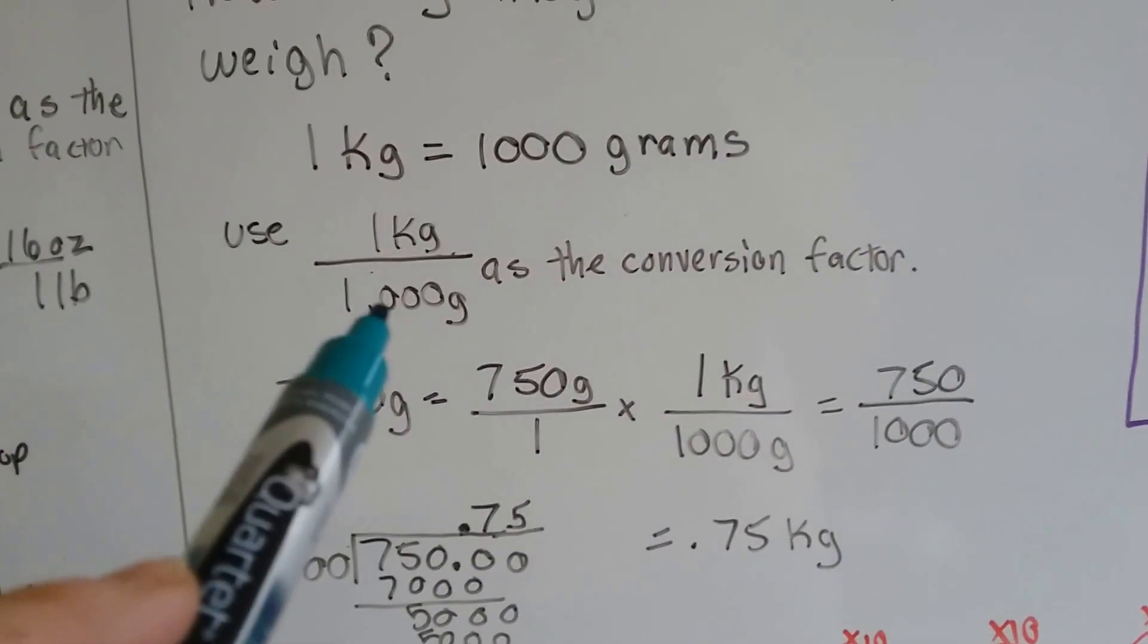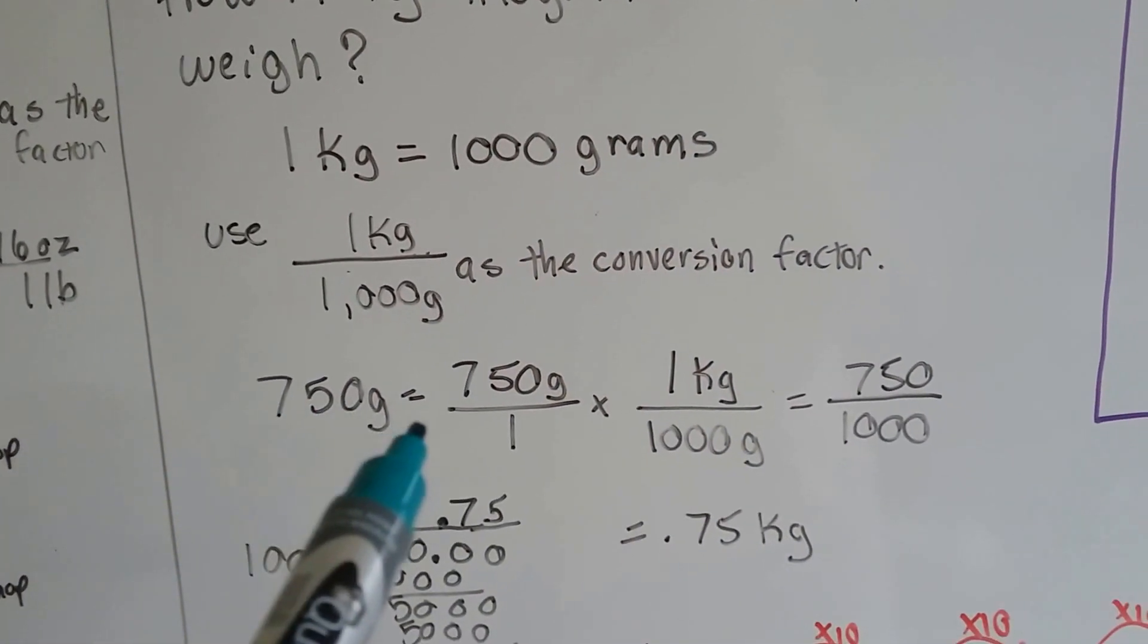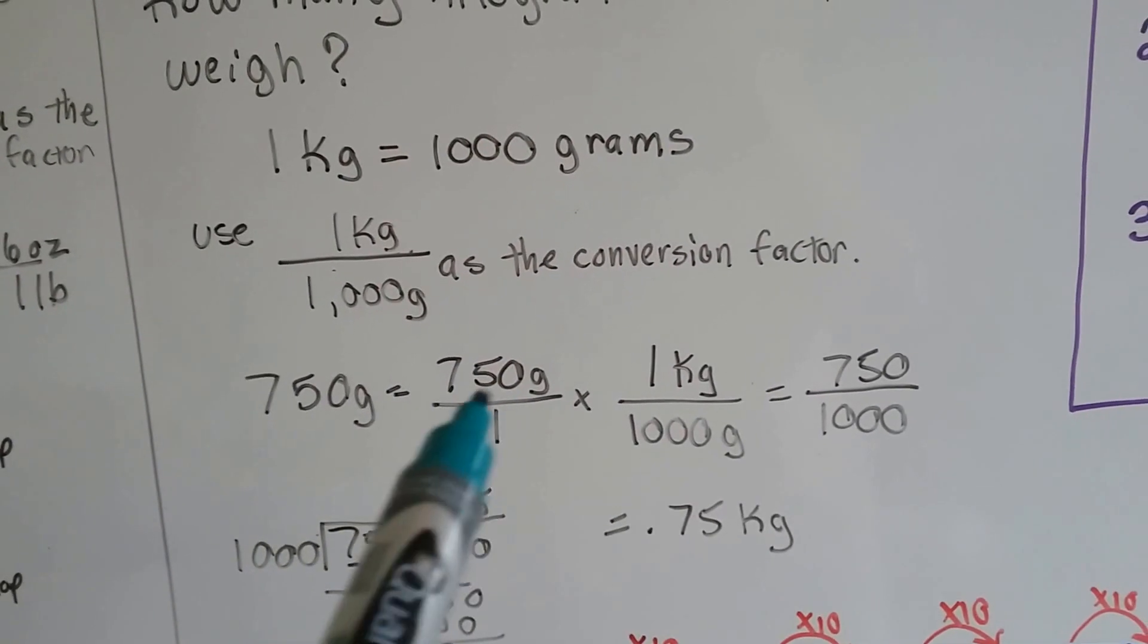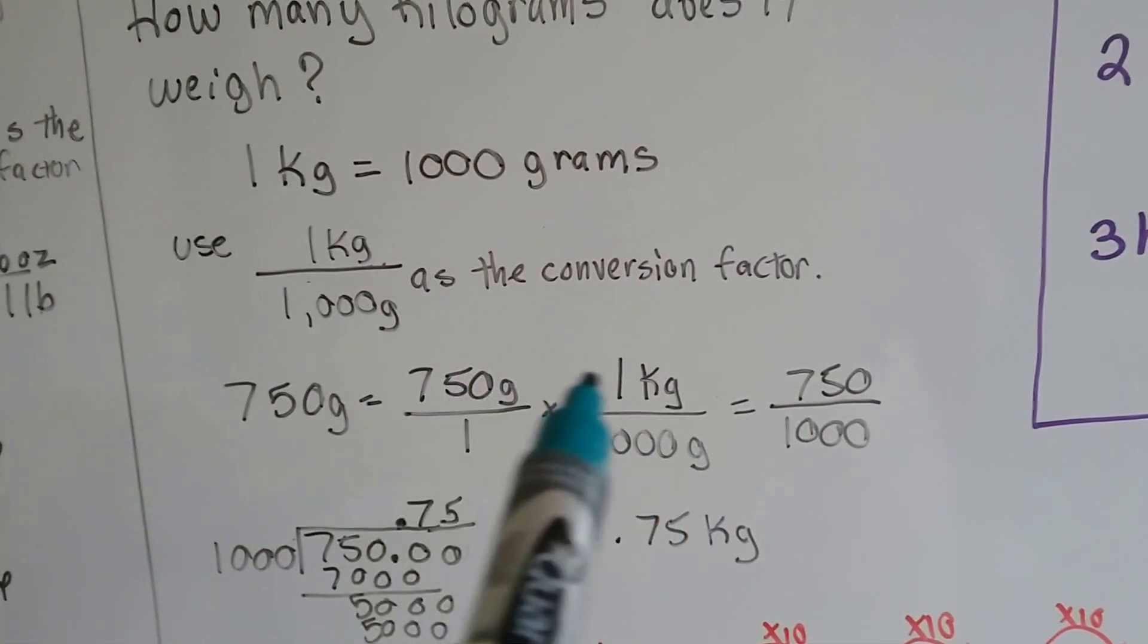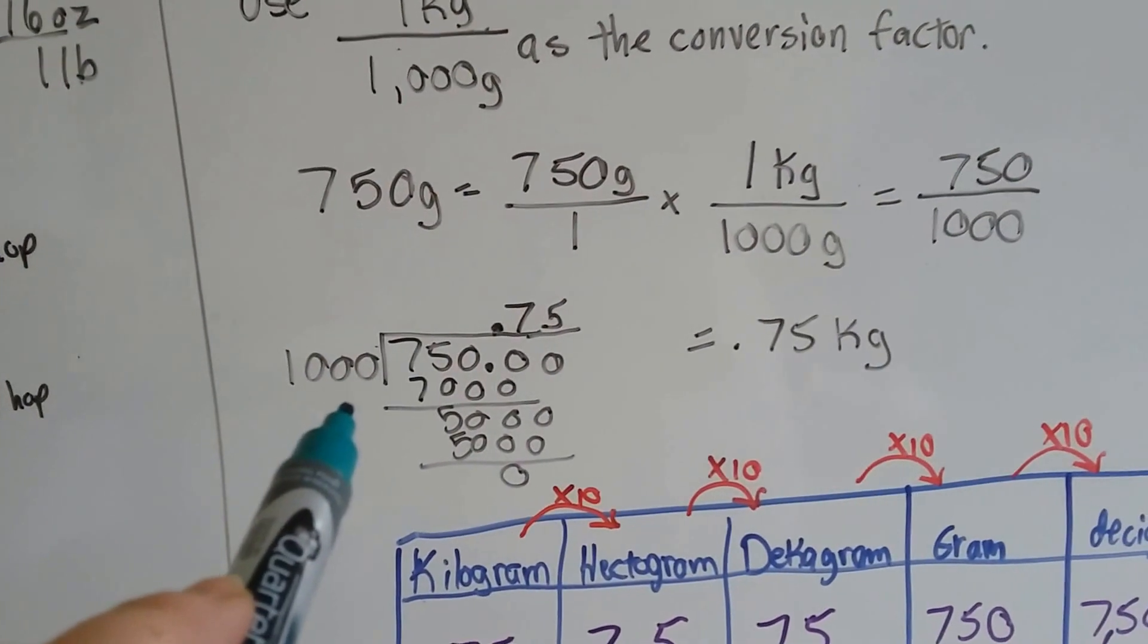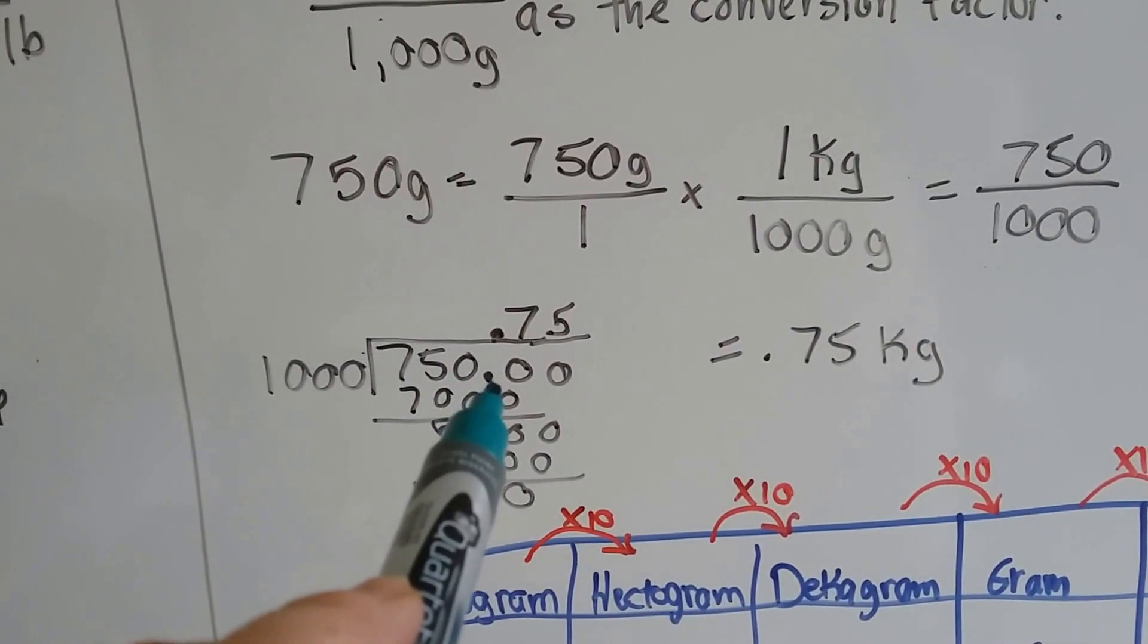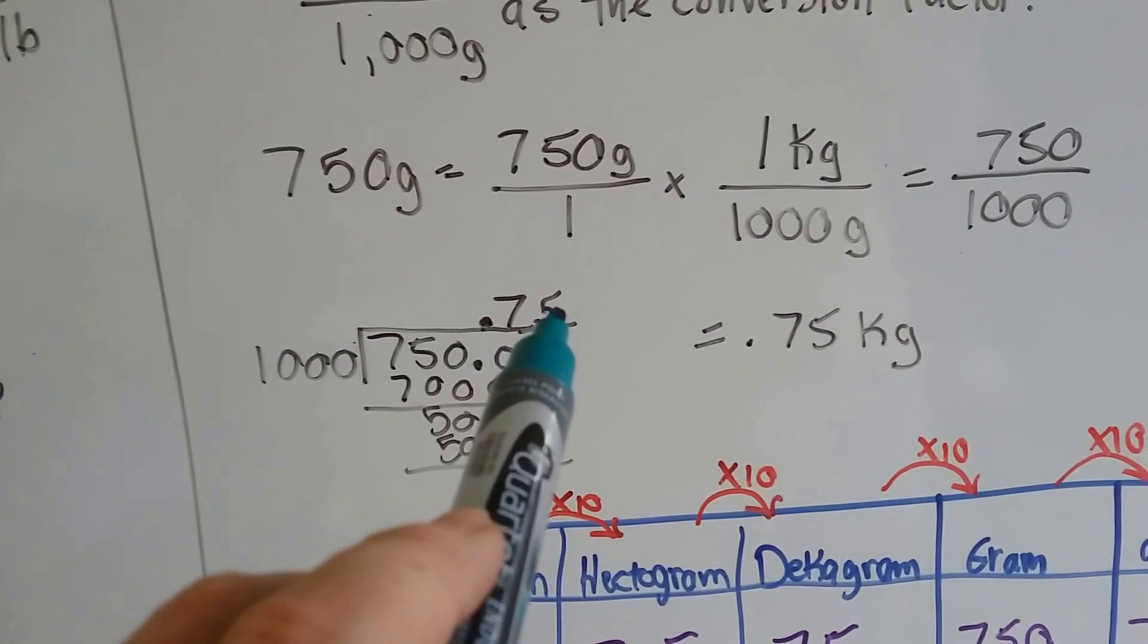We're going to use the 1 kilogram over 1,000 grams as our conversion factor. So the 750 grams is equal to the 750 grams over 1 as a fraction. And we multiply it by our conversion factor. 750 times 1 is 750. 1 times 1,000 is 1,000. Now we need to divide 1,000 into the 750. So we need to add decimal points and zeros. When we're all done, we get 0.75.